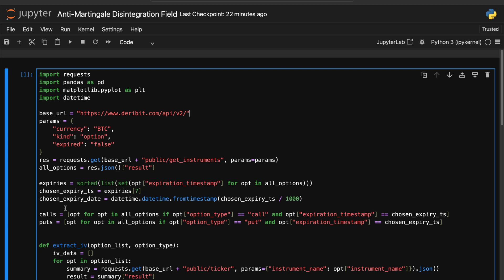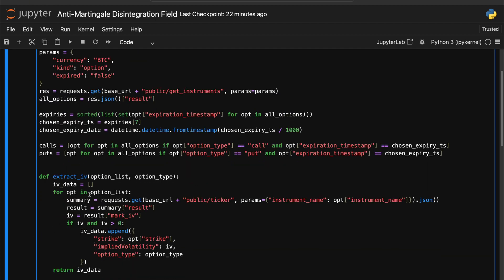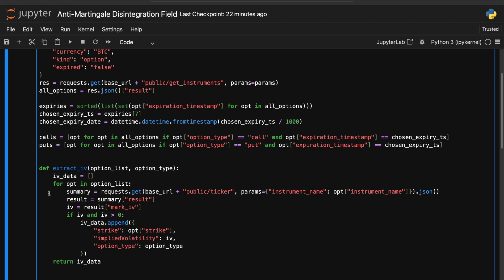Next, I'm splitting those options into two groups, calls and puts, both for the selected expiry. So again, August in this case. The extract implied volatility function is doing the heavy lifting here—loops over each option, pulls the latest ticker data, and grabs the marked implied volatility. I'm only keeping valid values here. So no zero values or no missing data values.